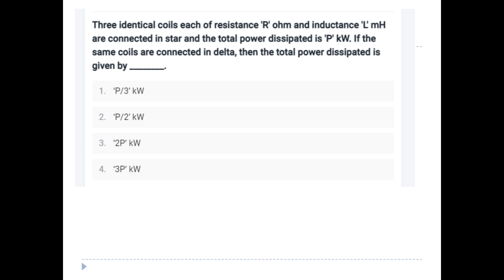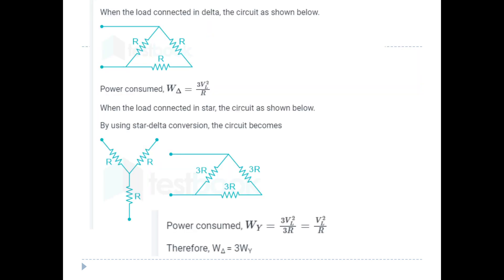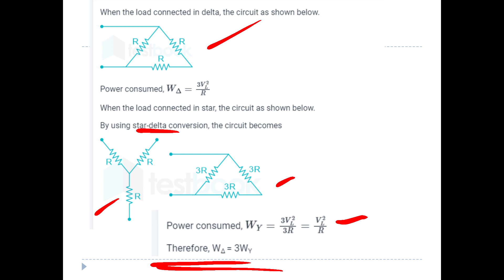Three identical coils, each of resistance R Ohm and inductance L mH, are connected in star with total power dissipated P kW. If the same coils are connected in delta, the power in delta equals 3VL squared divided by R. Power in delta equals 3 times power in star. This is very important.